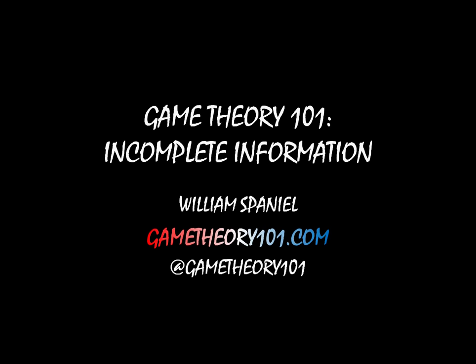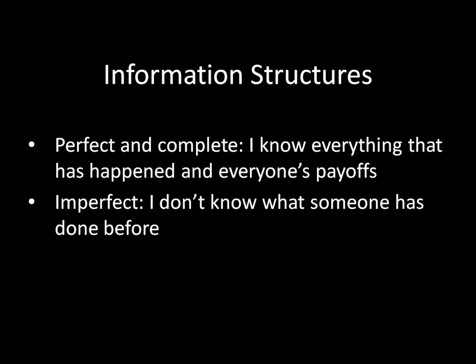Informational structures are critical in strategic interactions. We've seen a couple of different types of informational structures so far. First, we've seen cases where there is perfect and complete information — games where I know everything that has happened previously, and I know what everyone else's payoffs are. An example of this would be anything we looked at in the second unit of this course, when we were using backward induction and subgame perfect equilibrium as our solution concepts.